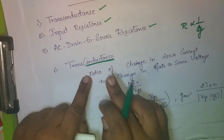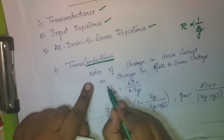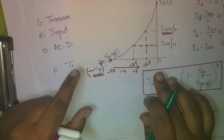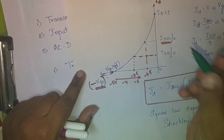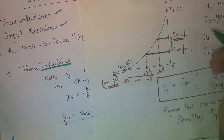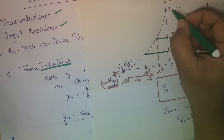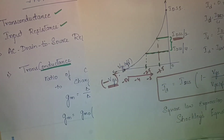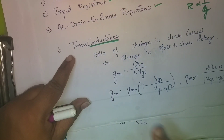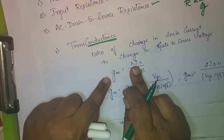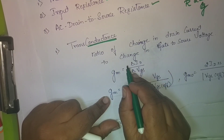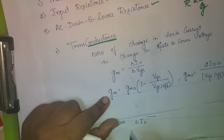Transconductance is the ratio of change in drain current to change in gate-to-source voltage. When we take the transfer characteristic, we take the change in drain current — whatever current Id we get — to the change in the applied gate-to-source voltage. This ratio from the transfer characteristic is termed as transconductance: gm = ΔId / ΔVgs. This is the equation to find transconductance.